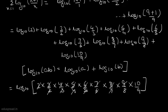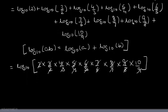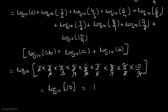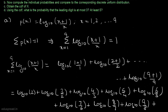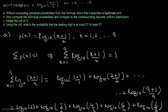All these values cancel and the only value left inside the bracket is 10. So this is log base 10 of 10, which equals 1. This means that the summation of this function equals 1, so this is a legitimate probability mass function. With this we are done with part A.